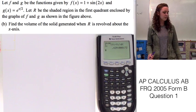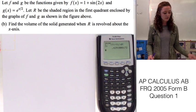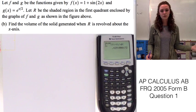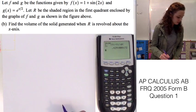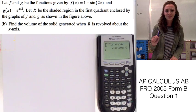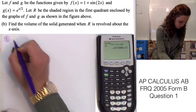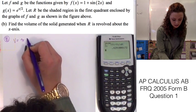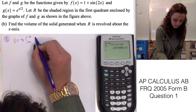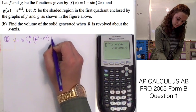Part B asks us to find the volume of the solid generated when R is revolved around the x-axis. Looking at the graph, if this shape is rotated around the x-axis there's going to be a hole in the middle. So we're going to have to use the washer method of finding the volume of this figure. For part B, the equation is pi times the integral from A to B of big R squared minus little r squared dx.